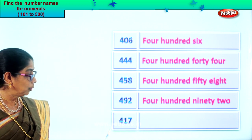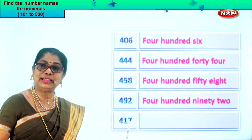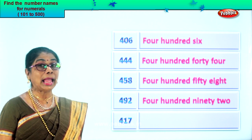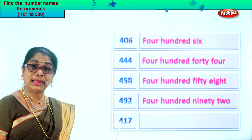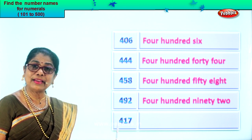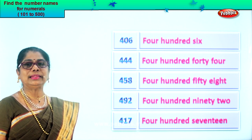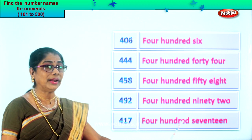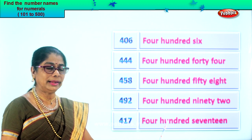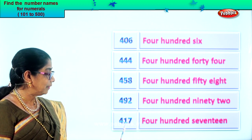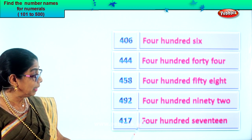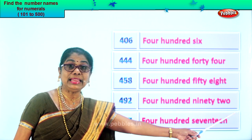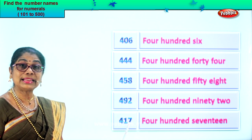Let's look at another numeral. You have four, one, seven — seven in the ones place, one in the tens, and four in the hundreds place. So we read this number as four hundred seventeen. When you write the number name, first we write four, then you write hundred — four hundred. Next you have one and seven: seventeen. So we write seventeen. Four hundred seventeen.